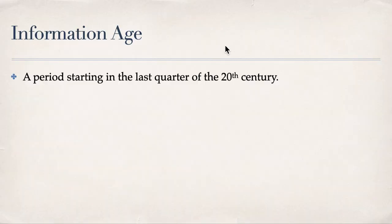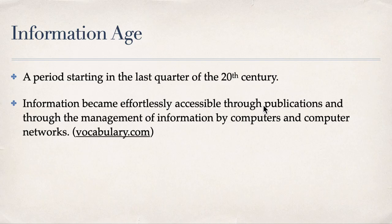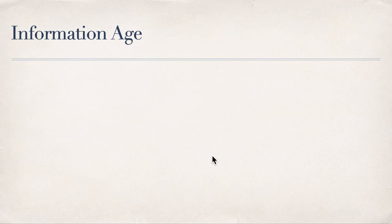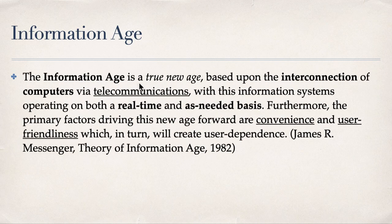Furthermore, the information age is a period starting in the last quarter of the 20th century when information became effortlessly accessible through publications and through the management of information by computers and computer networks — taken from vocabulary.com. We also have this age called the digital age and the new media age. The information age is said to be a true new age, based upon the interconnection of computers via telecommunications or wireless, with information systems operating on both a real-time and as-needed basis.